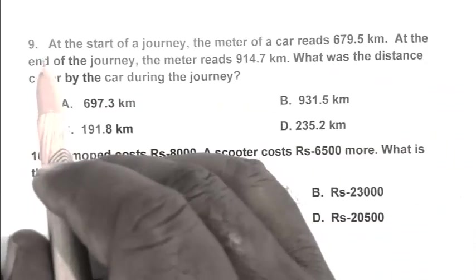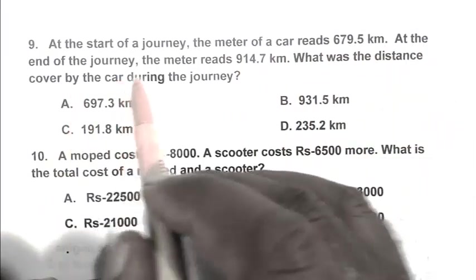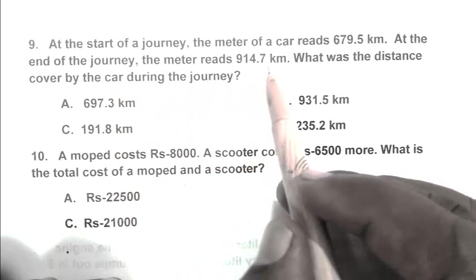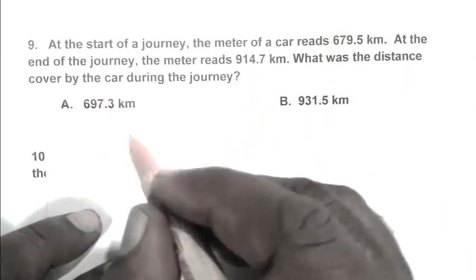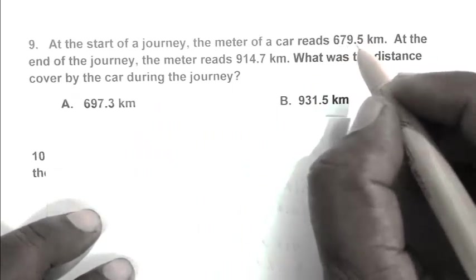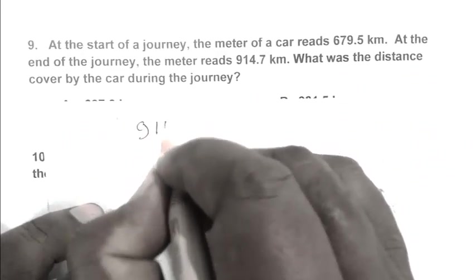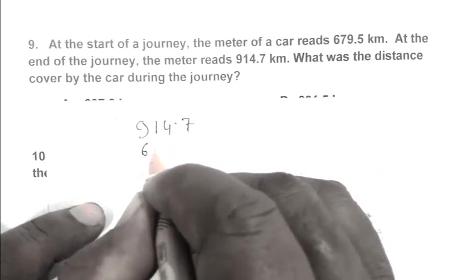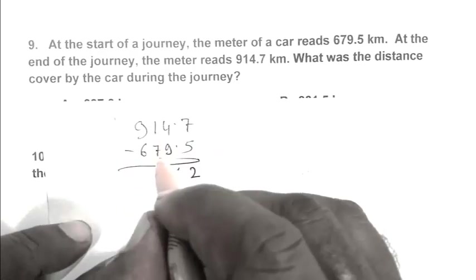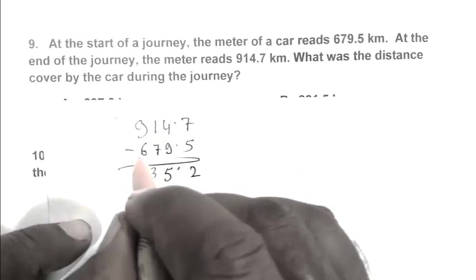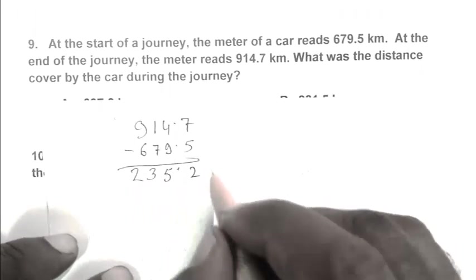Question number 9. At the start of a journey the meter of a car reads 679.5 kilometers. At the end of the journey the meter reads 914.7 kilometers. What was the distance covered? Simply we subtract 679.5 from 914.7. 914.7 minus 679.5 equals 235.2 kilometers. D is the right answer.